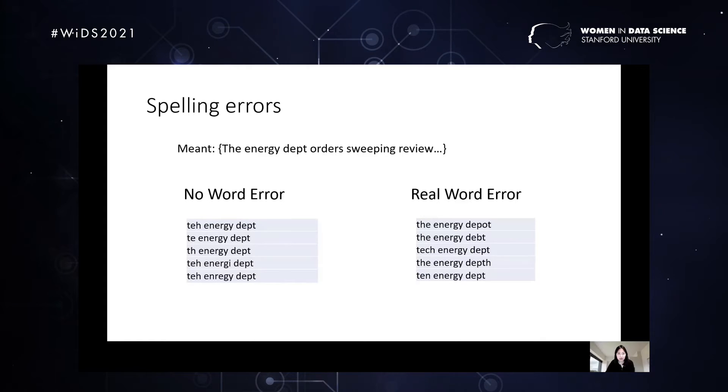There are different kind of categories of errors we call real word error. So in this category, basically, if you take the word individually to see and to look at them, they are all correct. Like the energy depot, the energy debt, tech energy department, the energy depth, ten energy department. So all of the words here are correct. But in this context, they are obviously wrong. So spelling is not really a simple matter of detecting invalid words and finding the right word at a distance. Misspelling and typos can overlap with valid words. And very rare words may be correctly spelled technical terms or acronyms and abbreviations. Instead, spell correction needs to infer the most likely formulation from an imperfect input, taking the entire statement into consideration.